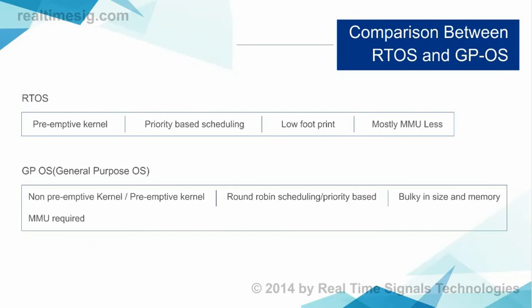In RTOS, you must have priority-based scheduling because high-priority tasks have to finish within their deadline, and it must be preemptive because critical tasks may require immediate attention. In terms of memory, RTOS requires only a few KBs, whereas a general purpose OS may require megabytes or thousands of megabytes, as is typical for Windows or Linux. Additionally, a general purpose OS requires a Memory Management Unit to handle many parallel applications, whereas RTOS does not require such a complicated MMU.